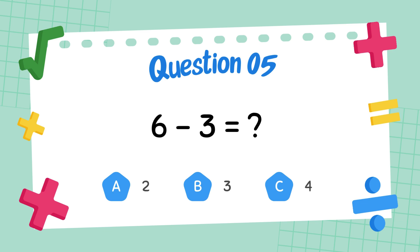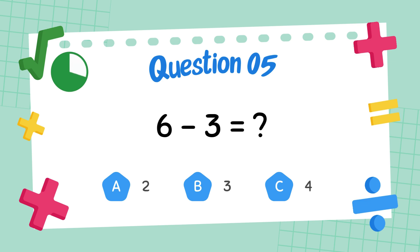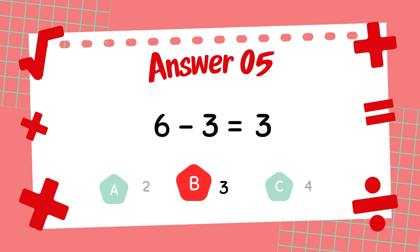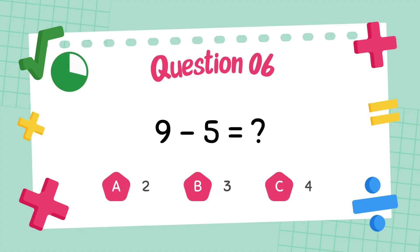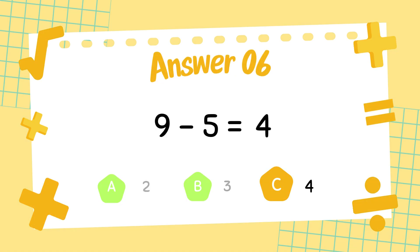What is 6 minus 3? The answer is 3. What is 9 minus 5? The answer is 4.